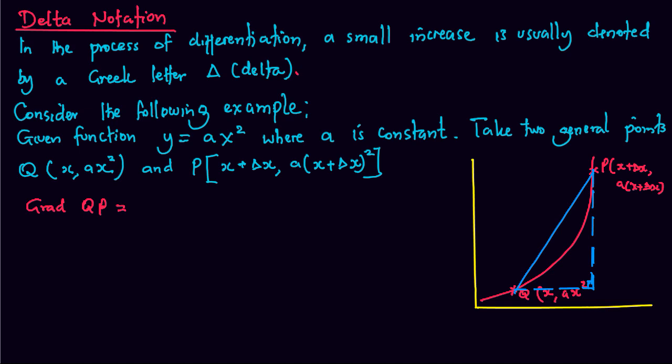We have a small change in x which gives us the coordinate at this point as x plus small change. While on the other hand, we have a into x plus a small change in x. This will be point x.